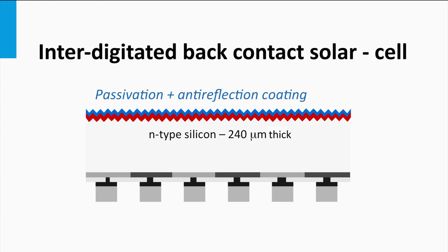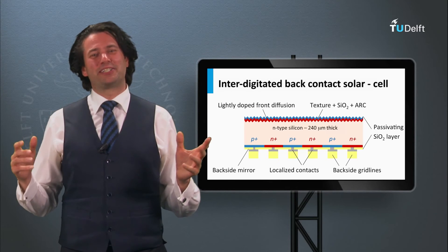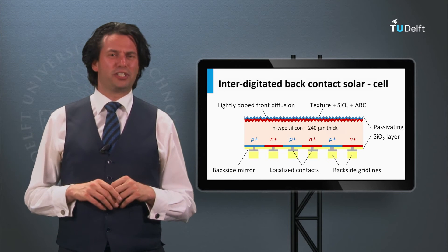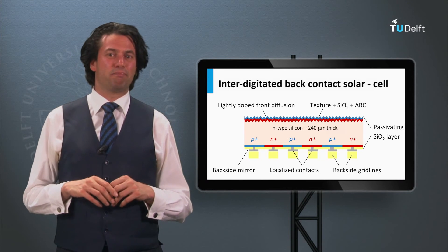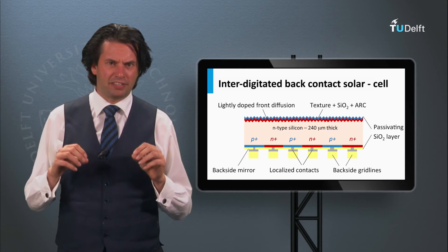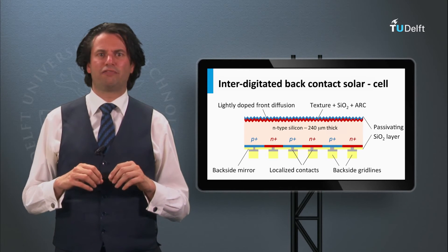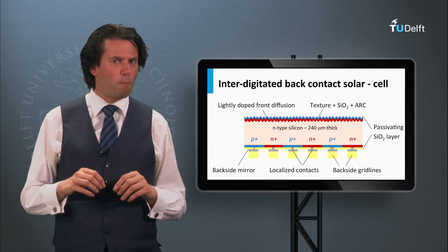At the front side, the reflective losses can be reduced using the same tricks as discussed for the PEARL solar cell. Deposition of double-layered anti-reflection coatings and texturing of the front surfaces. SunPower is the company that has developed the cell technology based on interdigitated back contacts. They have achieved high solar cell efficiencies of 24.2%.